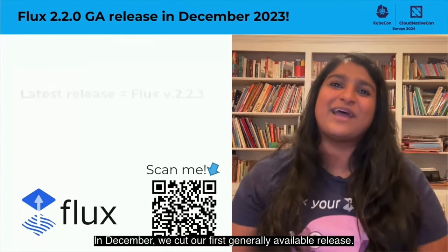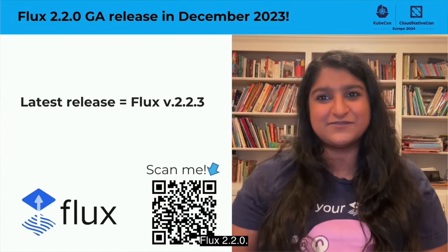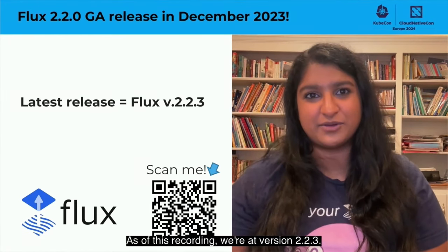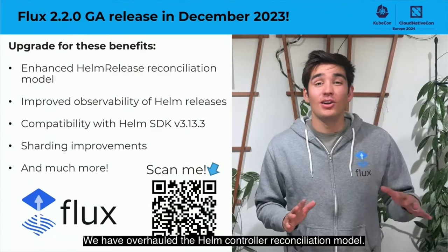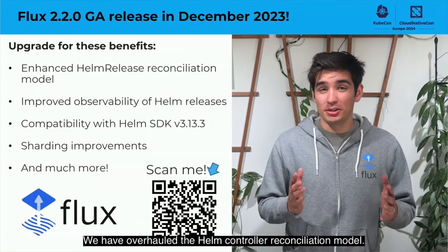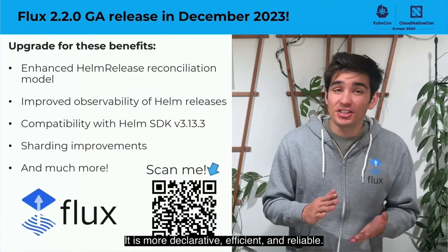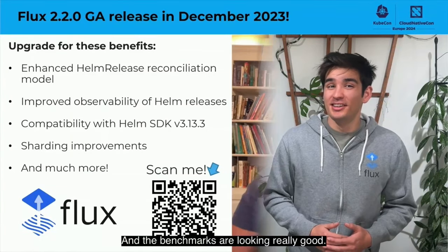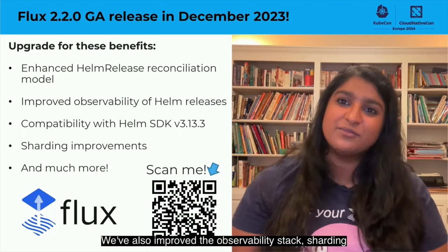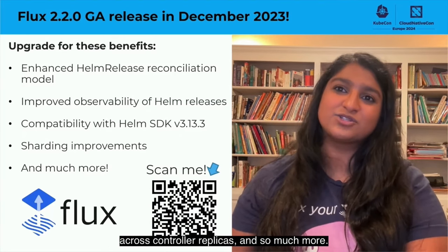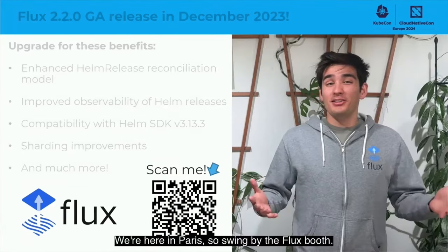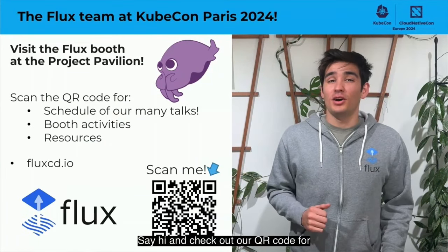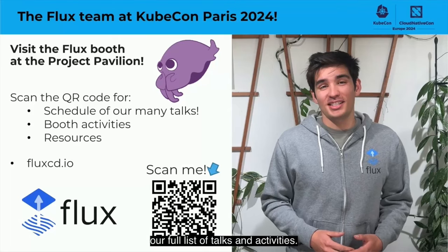In December, we cut our first generally available release, Flux 2.2.0. As of this recording, we're at version 2.2.3. We have overhauled the Helm controller reconciliation model — it is more declarative, efficient, and reliable, and the benchmarks are looking really good. We've also improved the observability stack, sharding across controller replicas, and so much more. We're here in Paris, so swing by the Flux booth, say hi, and check out our QR code for our full list of talks and activities.